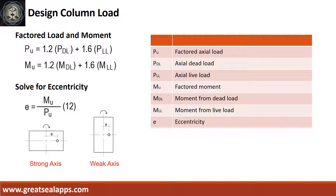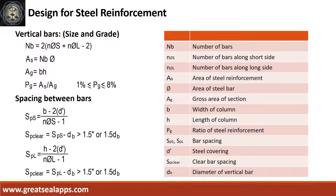Solve the factored axial load and factored moment to get the eccentricity based on strong or weak axis. Get the total number of vertical bars from bar configuration to get the area of steel. Solve the gross area of section to get the ratio of steel reinforcement, which should fall between 1% to 8%, then get the spacing between bars and check clear spacing between bars.